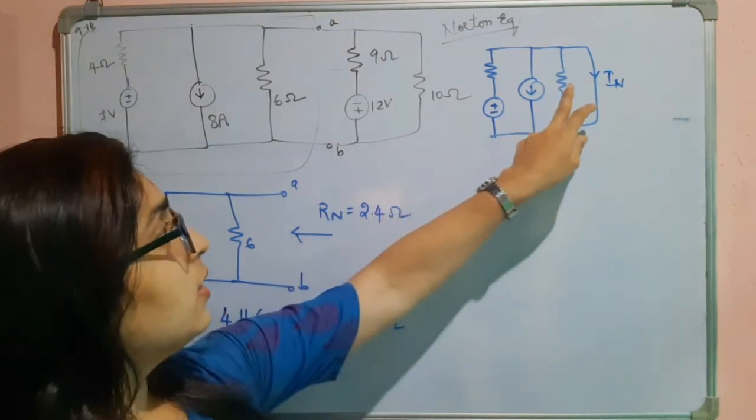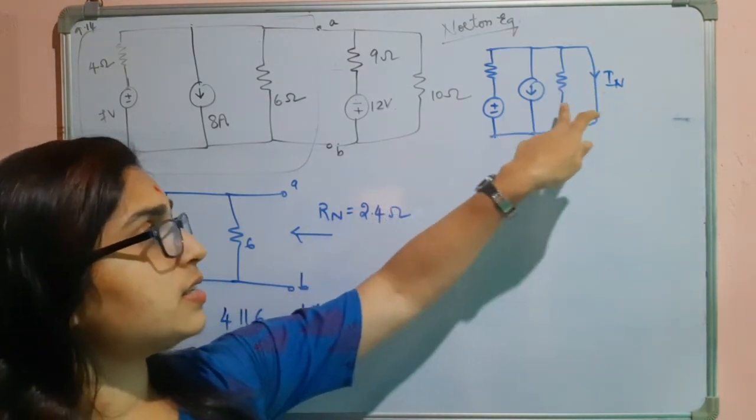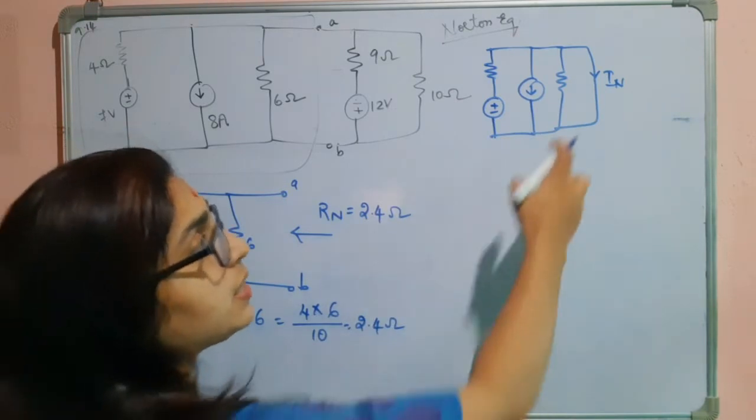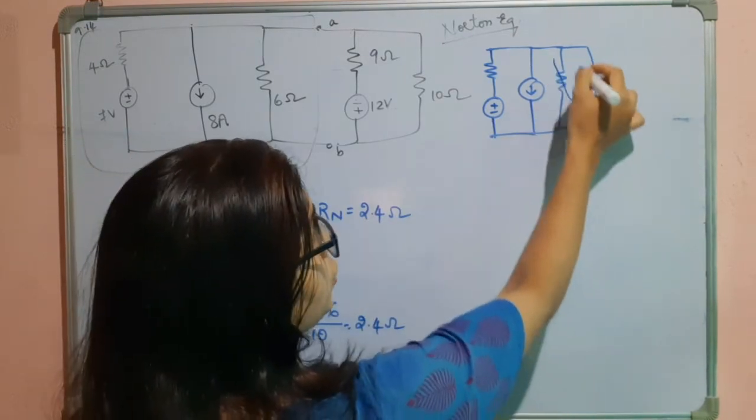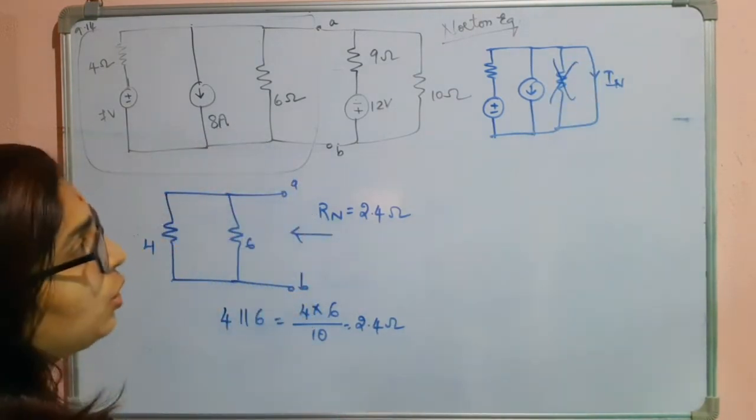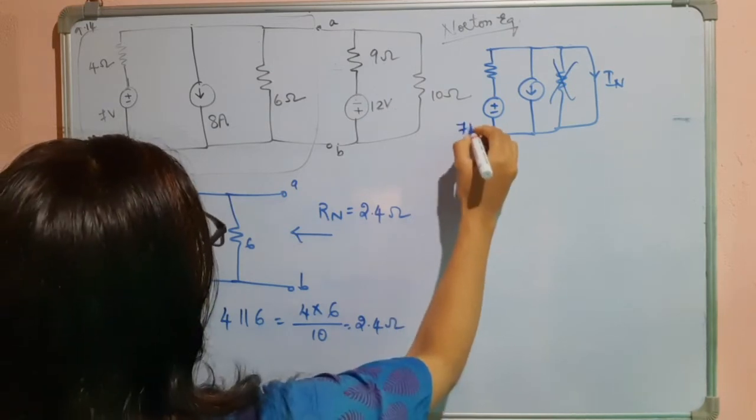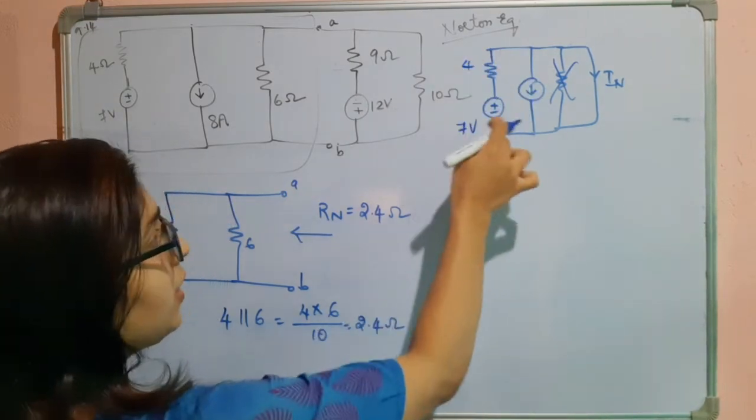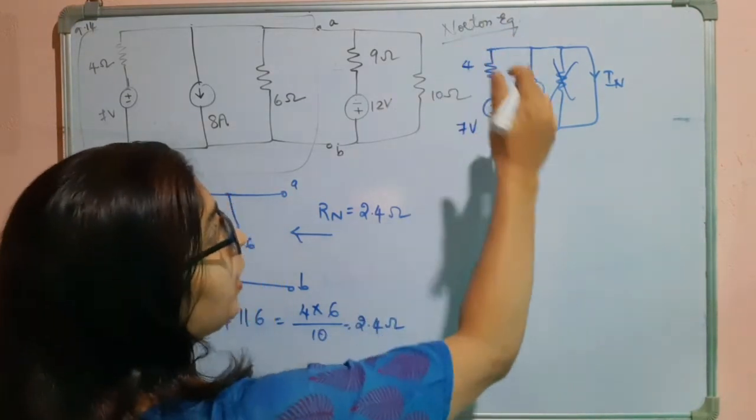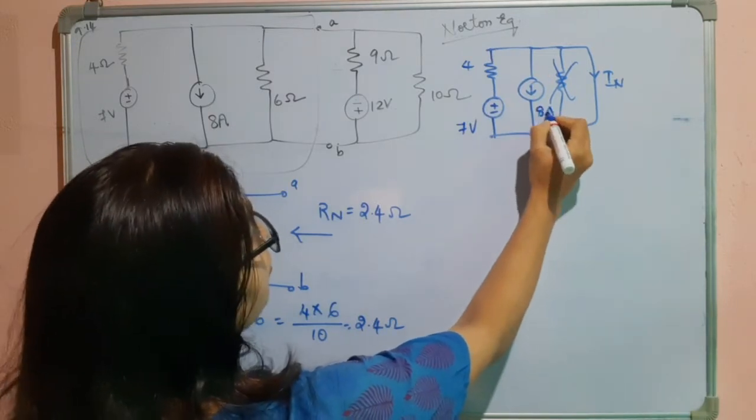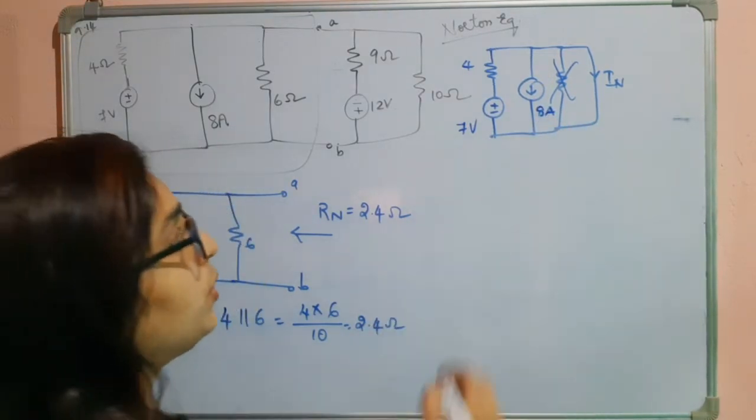What happens is this is redundant. This resistance is redundant because it is across this shorted branch. So I will not consider this in the calculation part. 7 volts and 4 ohms. What I will do is I will transform this voltage source.